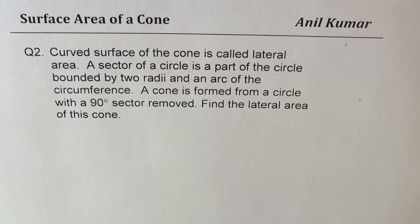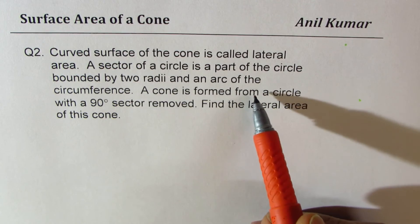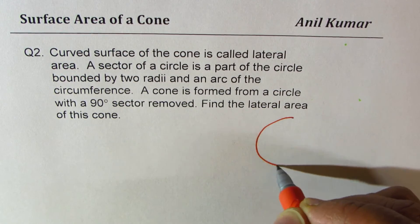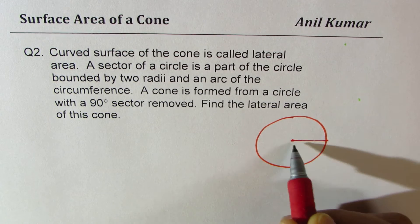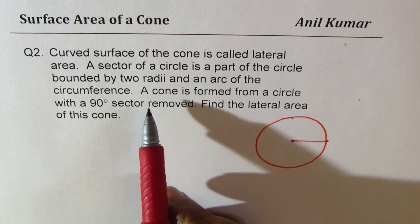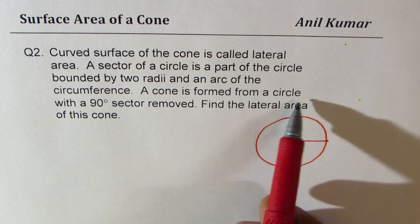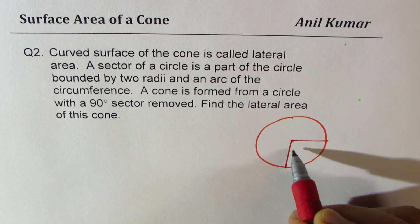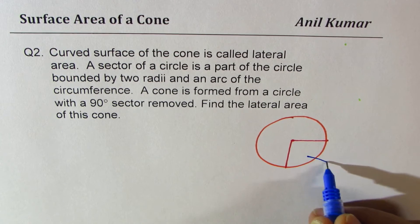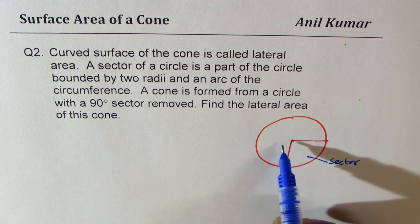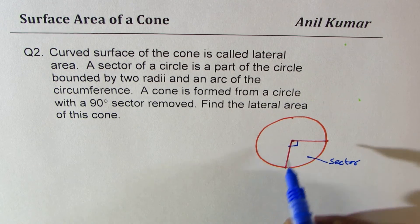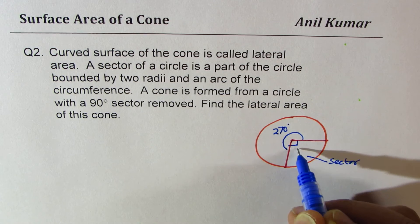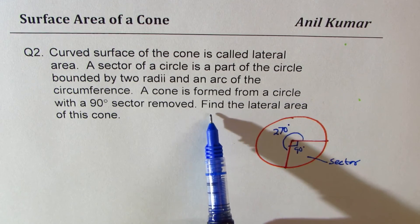Now let's take up question two: the curved surface of a cone is called lateral area. A sector of a circle is the part bounded by two radii and an arc. A cone is formed from a circle with a 90-degree sector removed. So we remove that 90-degree portion, leaving an angle of 270 degrees.